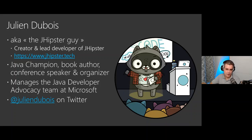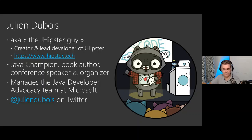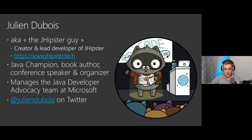I'm also known for being a Java Champion, for writing a book on Spring, and for speaking at conferences. As Emma mentioned, I manage the Java developer advocacy team at Microsoft. Inside my team we have Rory, who did the first two sessions of this series, and Sandra, who will do the last two sessions. You can follow me on Twitter at Julien Dubois.